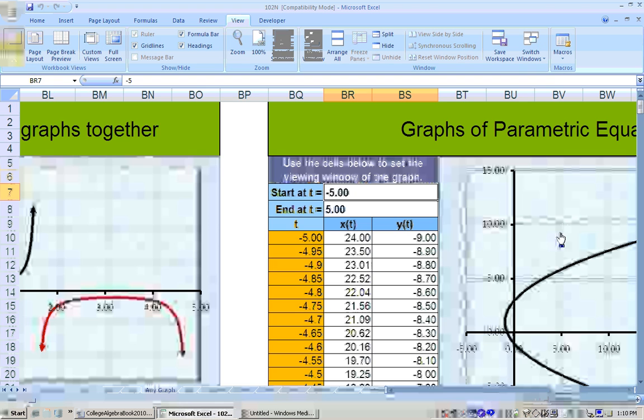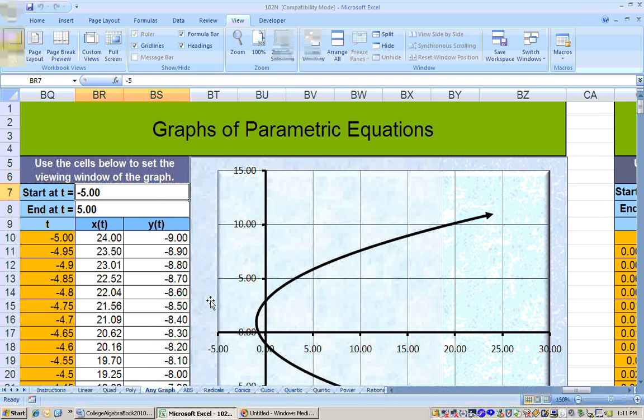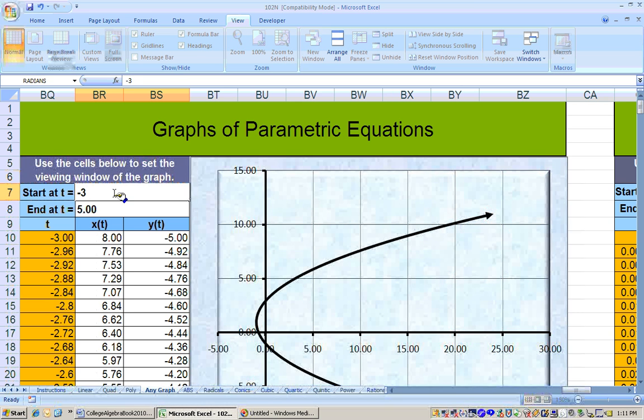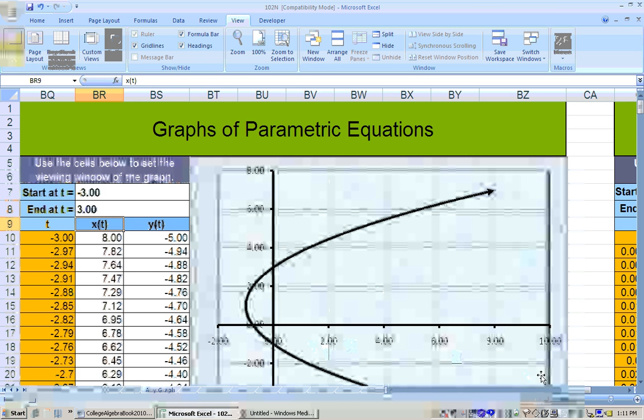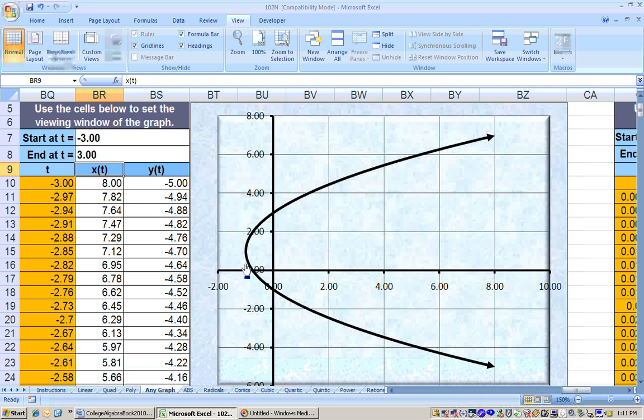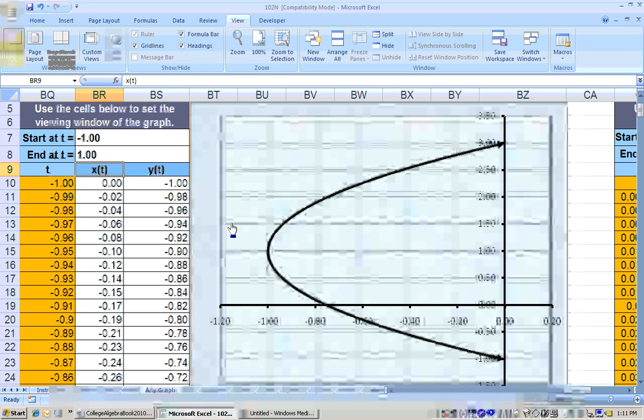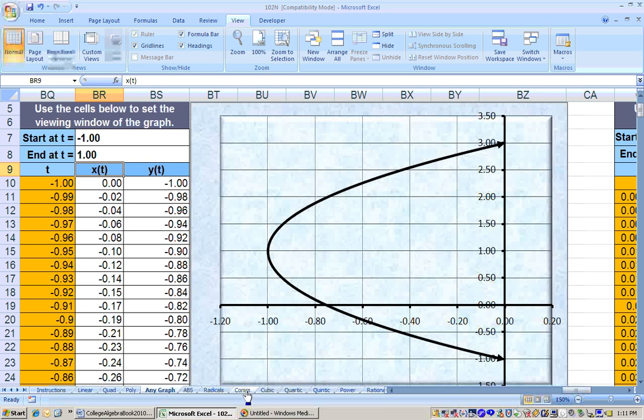Then I set my viewing window to be from negative 5 to 5, or you could make it negative 3 to 3, whatever you want. You can see that this is a sideways parabola. It does look like the vertex point is right over here, about negative 1, 1. In fact, let's go from negative 1 to 1, and you can see this point real good here that the vertex point is at that spot.